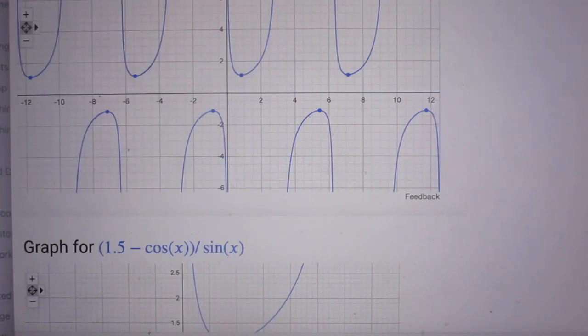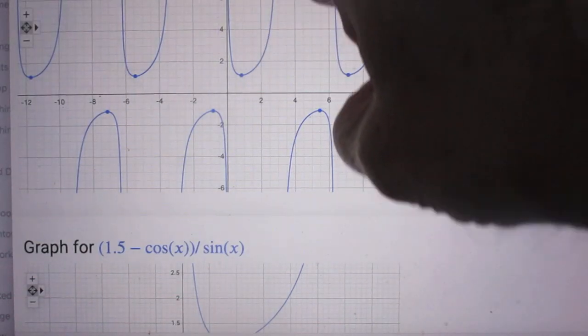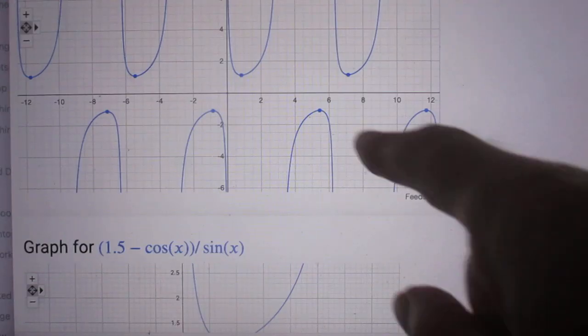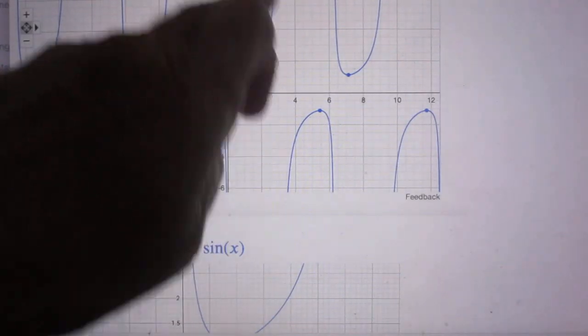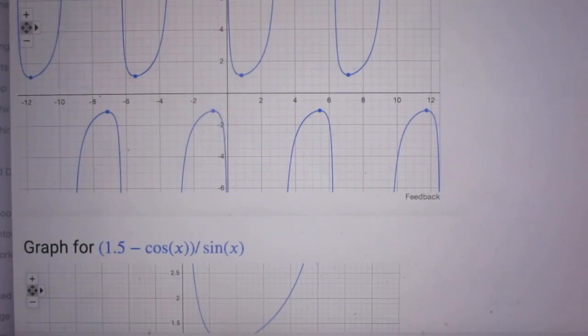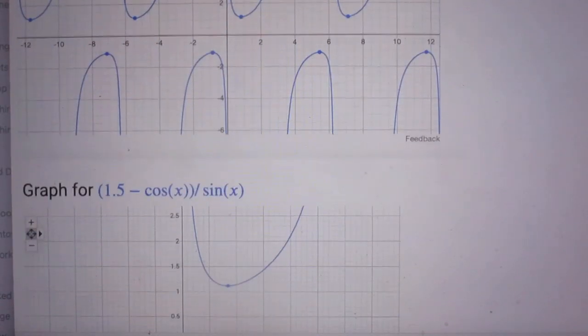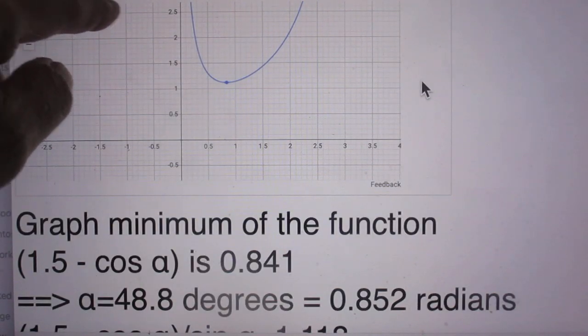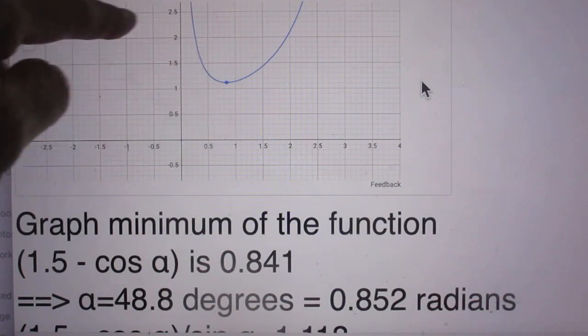So I asked Google to plot for me 1.5 minus cosine alpha divided by sine alpha. And that function has to be minimized. And here you see, as a function of angle, these are angles in radians, all these solutions for that curve. If sine x is zero, which is the case when alpha is 180 degrees, then of course this function is going to infinity. You can see that here. And if you go here to 3.14, then you go to infinity. It's obvious, 1 divided by zero.